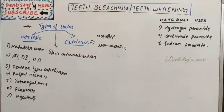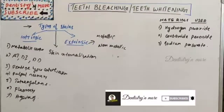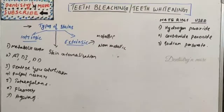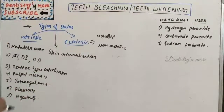Bleaching is indicated when there is mild discoloration on the surface, evenly distributed discoloration without bands or white spots, teeth discolored due to innate color or aging, hemorrhagic discoloration, and discoloration of anterior teeth after root canal treatment or medication.